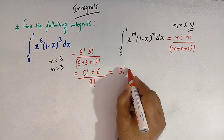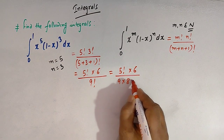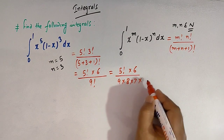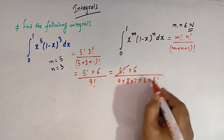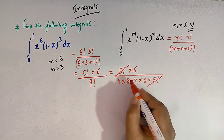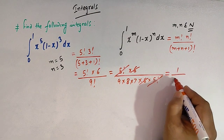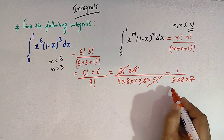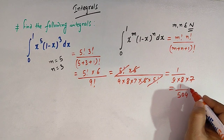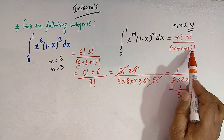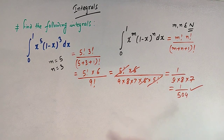We have 5 factorial times 6, and 9 factorial can be written as 9 times 8 times 7 times 6 times 5 factorial. The 5 factorial terms cancel, and 6 and 6 cancel, leaving 1 over 9 times 8 times 7, which equals 1 over 504. So the value of this integral is 1 divided by 504.